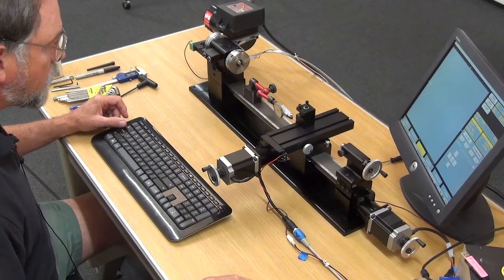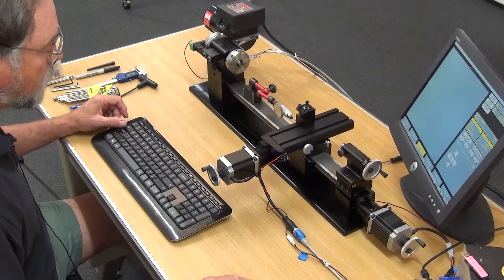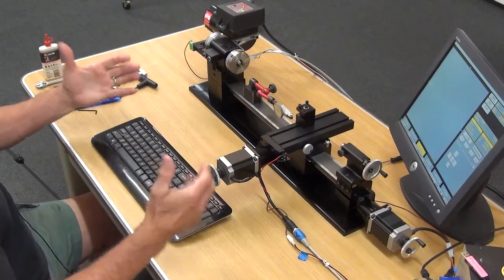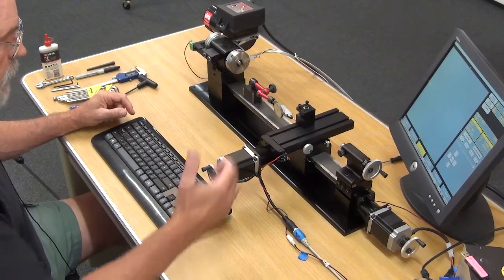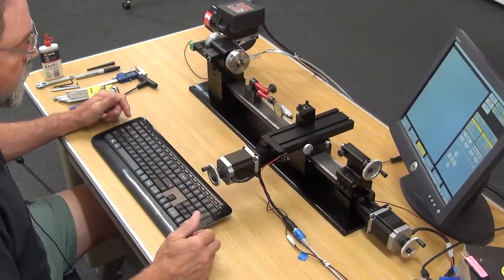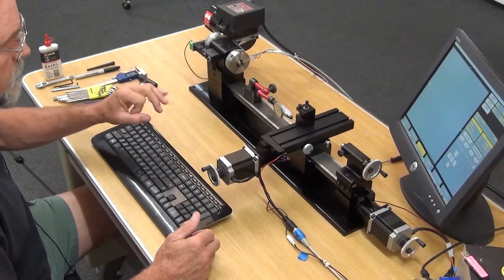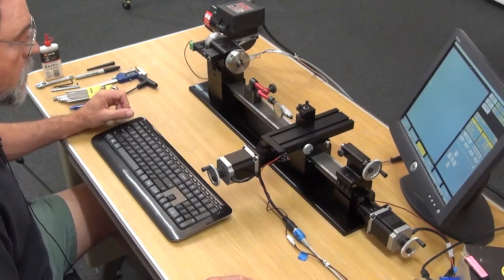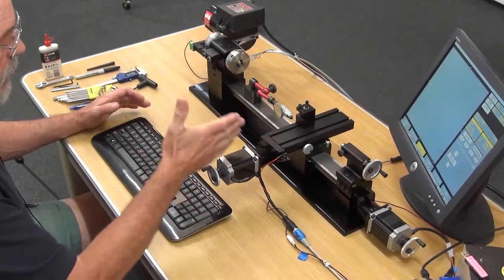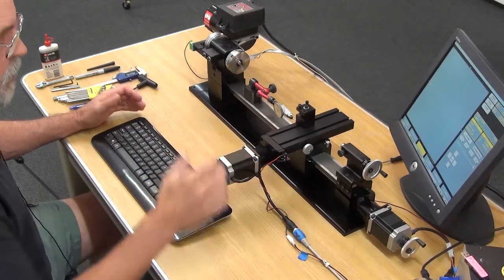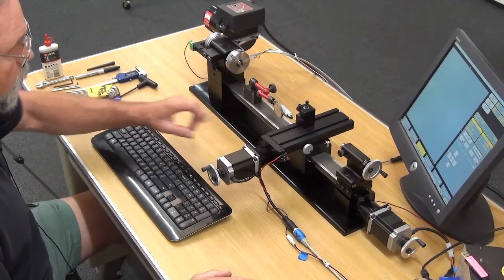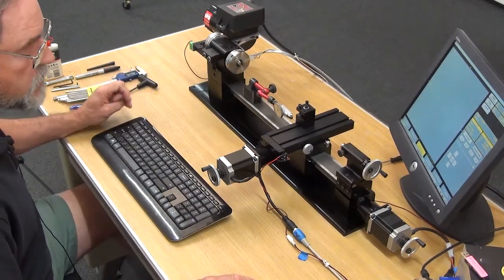Now the important thing to remember here is your machine is set up for diameter, so if you tell it to move one thou it's only going to actually move across like half a thou because that would be a diameter difference of one thou. So whereas on the z-axis it was a one to one ratio, it's a two to one ratio now, so in order to have this move four thousandths we have to actually give it a command to move eight thousandths.